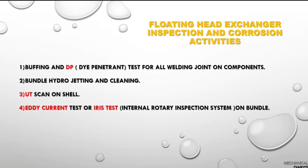Once all components are removed, you must perform all welding joint buffing and DP (dye penetrant) test — you will find weld cracks or defects from this DP test. Then do tube bundle hydrojetting to clean the internal surfaces. Next, perform UT (ultrasonic thickness) scan on the shell to know the shell thickness. Then eddy current and IRIS tests are done on the tube bundles to determine tube wall thickness.